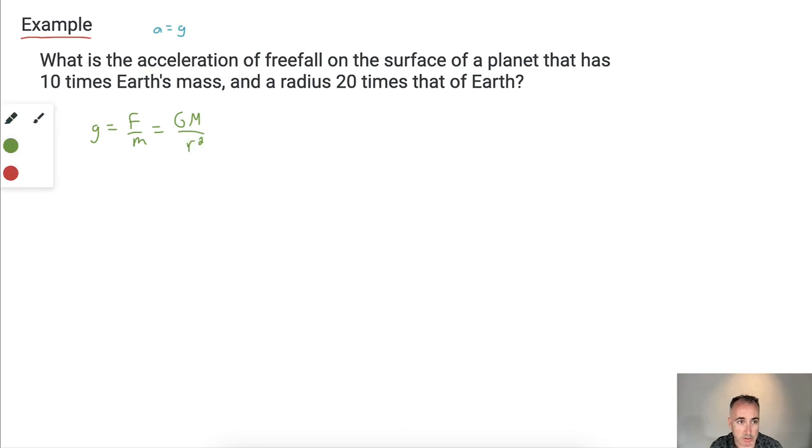So now we have a planet that has 10 times Earth's mass and a radius that is 20 times that of Earth. Let's just start figuring this out and see how we go. So we've got g equals capital G, which is 6.67 times 10 to the negative 11. Actually, you know what I'll do? I'll just leave it in terms of G for now.